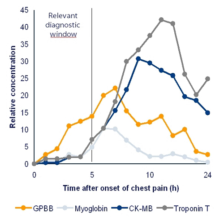More specifically, a biomarker indicates a change in expression or state of a protein that correlates with the risk or progression of a disease, or with the susceptibility of the disease to a given treatment. One example of a commonly used biomarker in medicine is prostate-specific antigen (PSA). This marker can be measured as a proxy of prostate size, with rapid changes potentially indicating cancer.